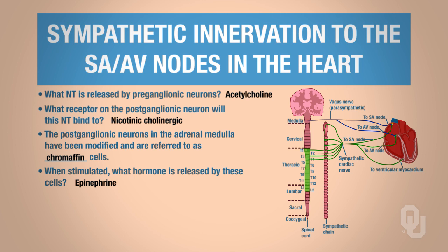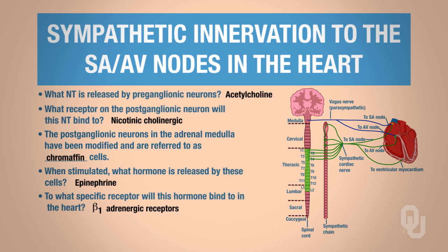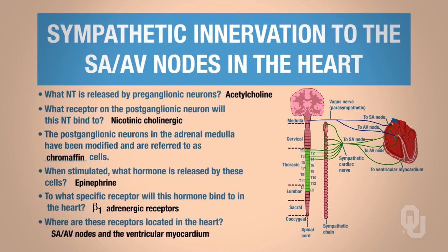Norepinephrine and epinephrine are both going to bind to the beta-1 adrenergic receptor in the heart. These beta-1 adrenergic receptors are located in the SA node, AV node, and the ventricular myocardium.